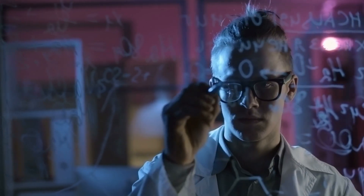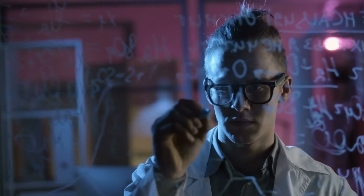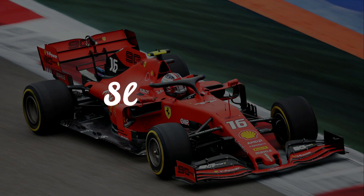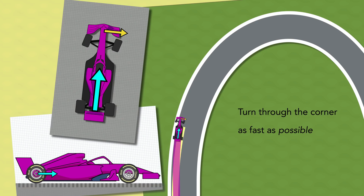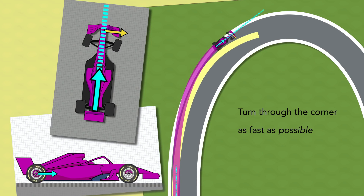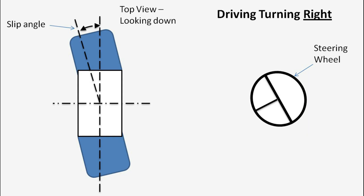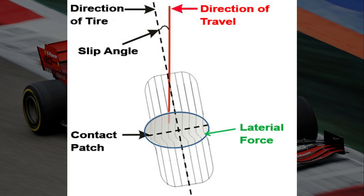Let's look at the basic science behind oversteer and understeer, starting with the slip angle. The slip angle is the angle between the direction in which a wheel is pointing and the direction in which it is actually traveling. As you can see in the image, when a driver turns the steering wheel to the right, the forces of the wheel are going straight, but the wheel is now pointing to the right, creating a slip angle.